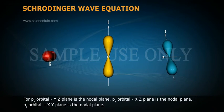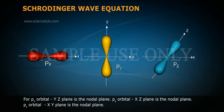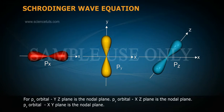For Px orbital, YZ plane is the nodal plane. Py orbital, XZ plane is the nodal plane. Pz orbital, XY plane is the nodal plane.